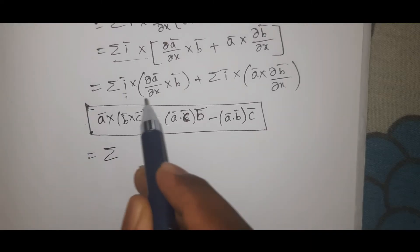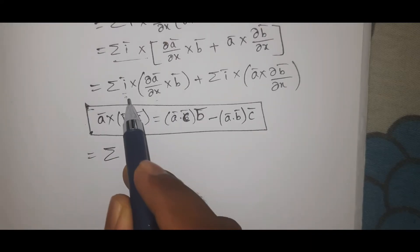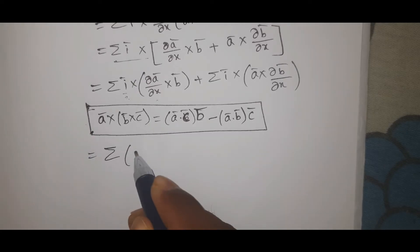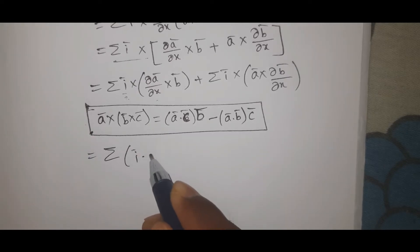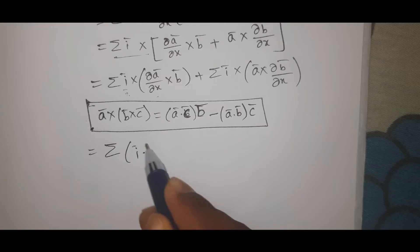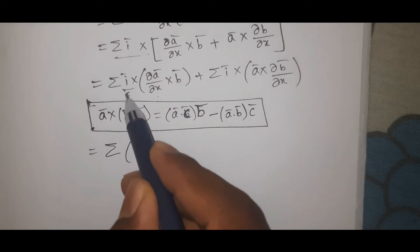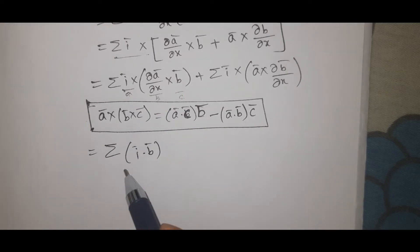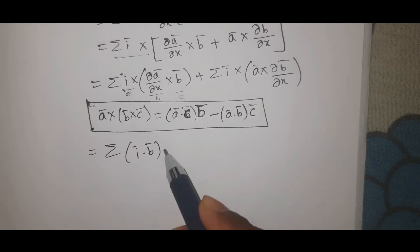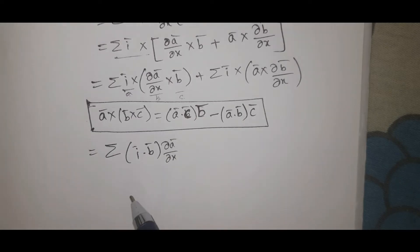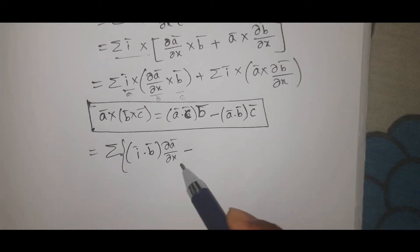Using this form with A, B, C: summation gives i̅ dot b̄ into ∂ā/∂x minus i̅ dot ∂ā/∂x into b̄. Then for the second part similarly: i̅ dot ∂b̄/∂x into Ā.